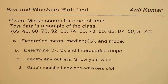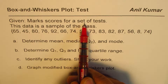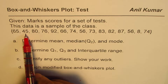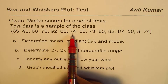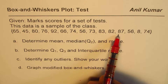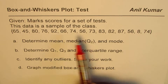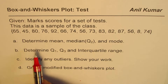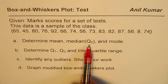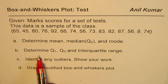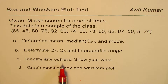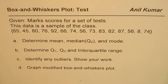We are given marks or scores for a set of tests. This data is a sample of the class, and the data is: 65, 45, 80, 76, 92, 66, 74, 56, 73, 83, 82, 7, 87, 56, 8, and 74. You need to find the mean, median (which is the second quartile), and the mode. You also need to determine Q1, Q3, the interquartile range, identify any outliers, and graph a modified box and whisker plot.